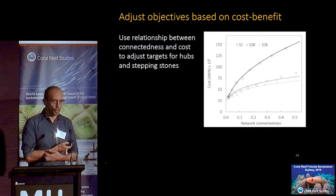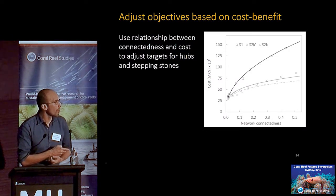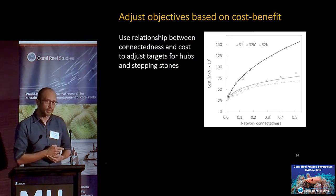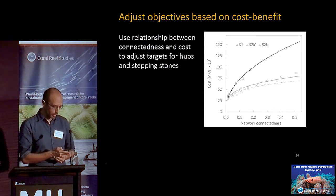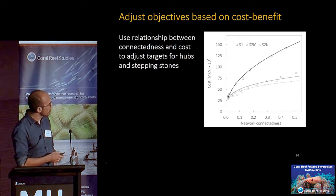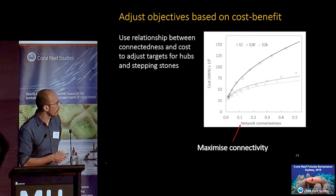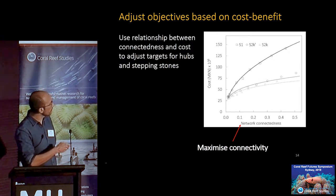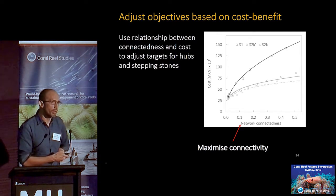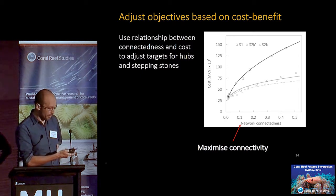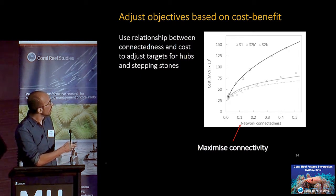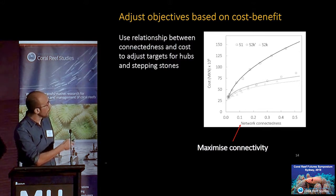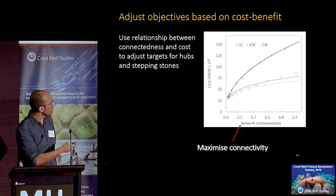In terms of socioeconomics, we wanted to see what the potential impacts of including connectivity or not would be in terms of reserve cost. The graph shows how network connectedness shifts in terms of cost. Obviously, if we make very large reserves we'll probably get more connectivity, but that typically results in very high-cost networks. So the question was: can we maximize connectedness without increasing cost too much? That's exactly what we did.